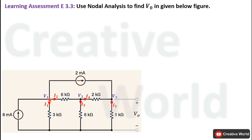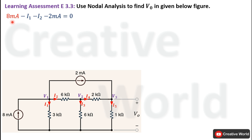We will start applying Kirchhoff's Current Law from the first node. On this node, one current is entering while three currents are leaving: I1, I2, and 2 mA. So the KCL equation for this node is: 8 mA equals I1 plus I2 plus 2 mA. Current I1 equals the voltage across the 3 kΩ resistance divided by 3 kΩ, which is V1 divided by 3 kΩ.